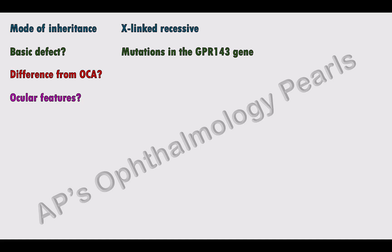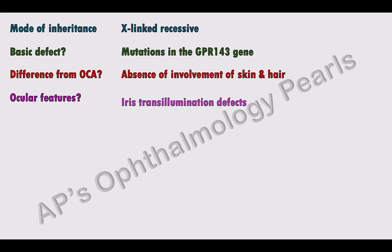The GPR143 protein affects melanosome number and size. The main difference from oculocutaneous albinism, which is autosomal recessive, is the absence of involvement of skin and hair in ocular albinism. The ocular features of both are similar.